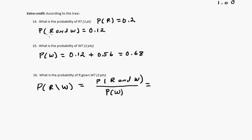So now, we already know the probability of R and W is 0.12. 0.12.